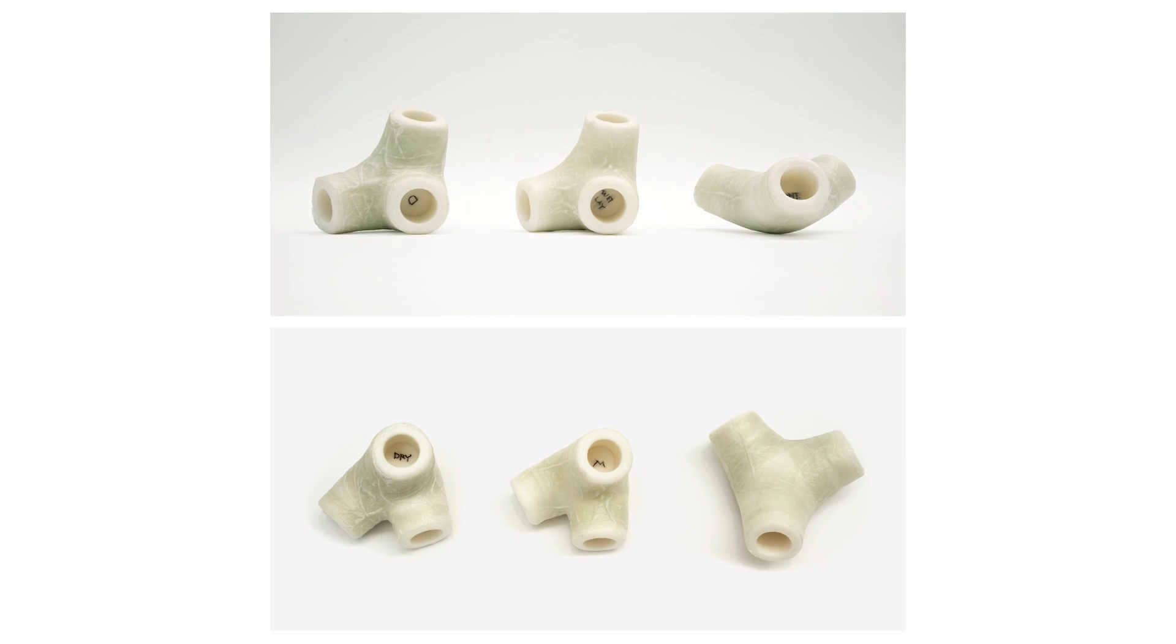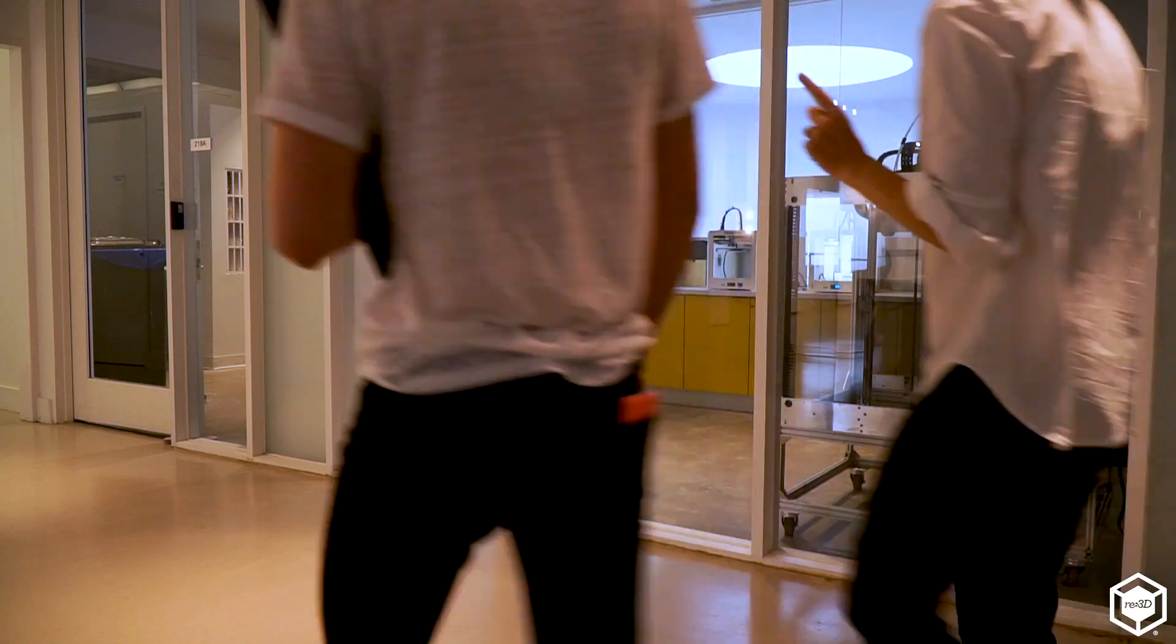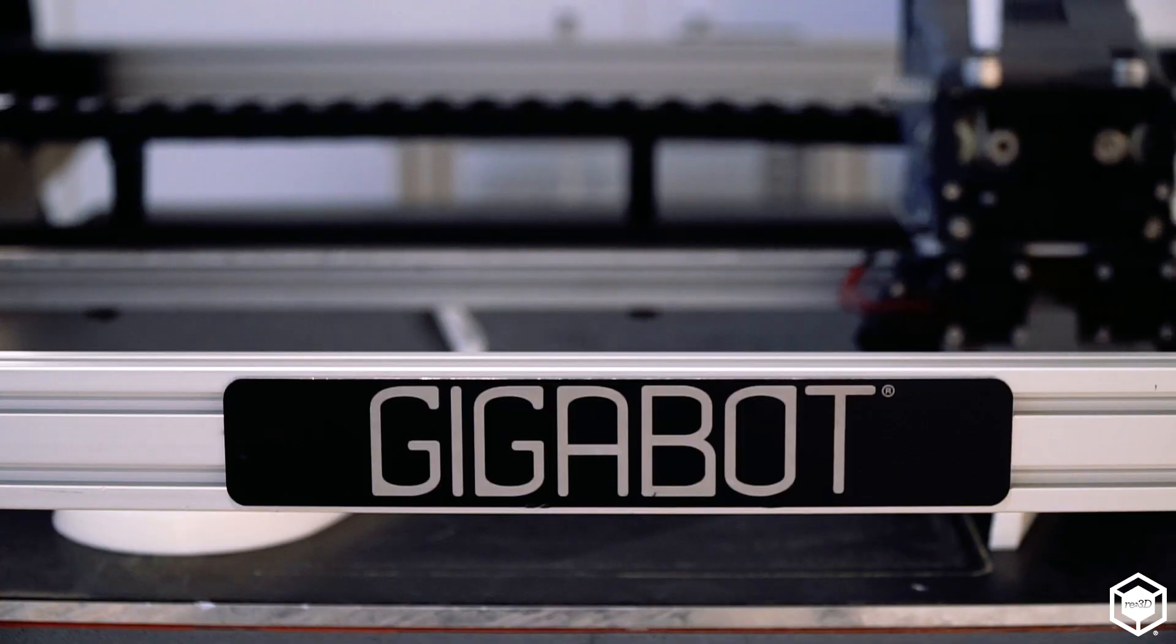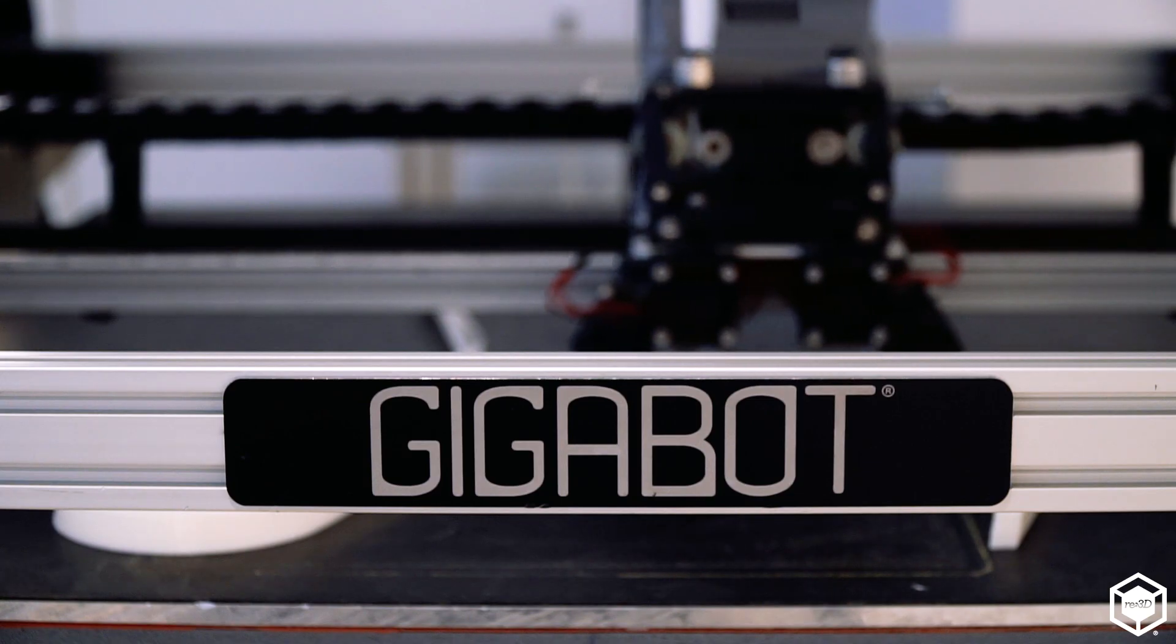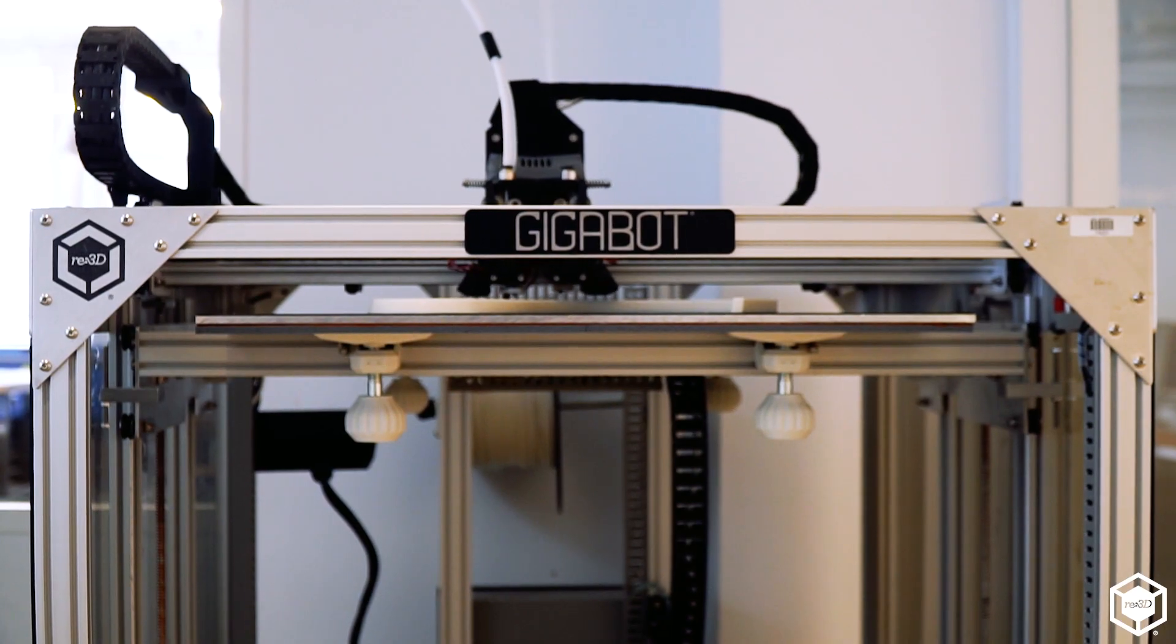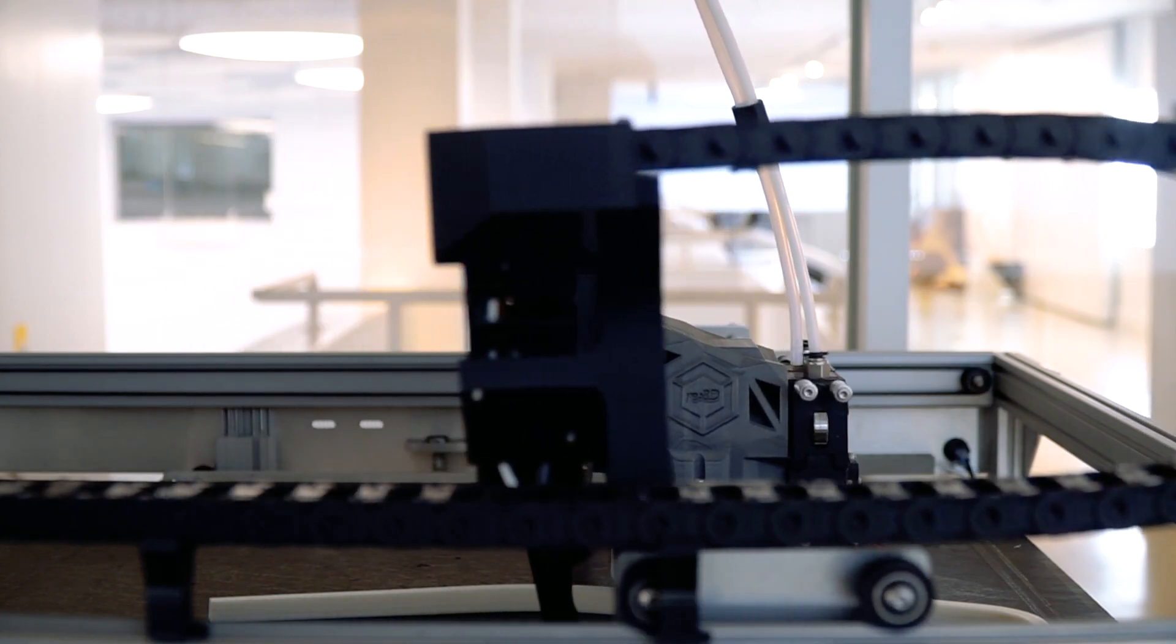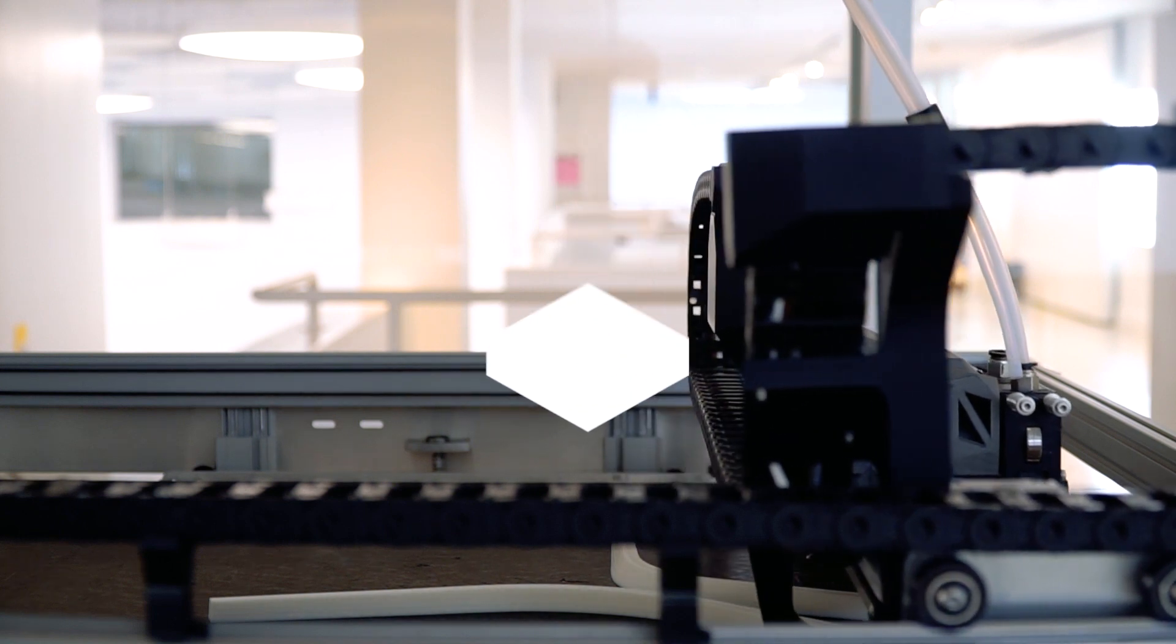If we didn't have the Gigabot, I either would have designed a different object or would have used a different process for constructing that object. Of course, we could machine a mold out of foam and then fiberglass the foam. All of those would have been more time-consuming and labor-intensive. So in the end, we probably would have designed a different object if we did not have the Gigabot.